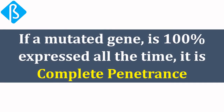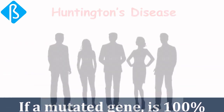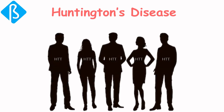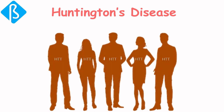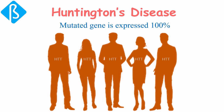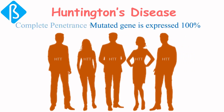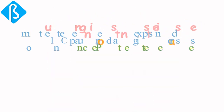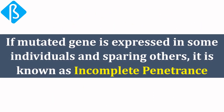If a mutated gene is expressed 100% of the time — for example, Huntington's disease — every individual with the HTT gene is undeniably suffering from Huntington's disease. The mutated gene is expressed 100% of the time; each and every individual with this mutated gene is surely suffering from Huntington's disease. This is complete penetrance of the gene.